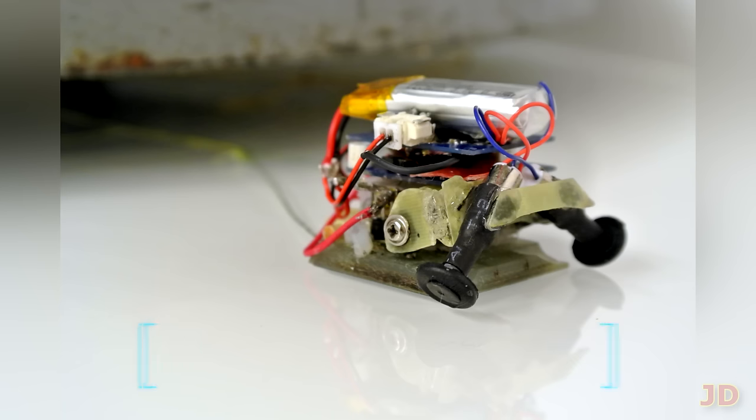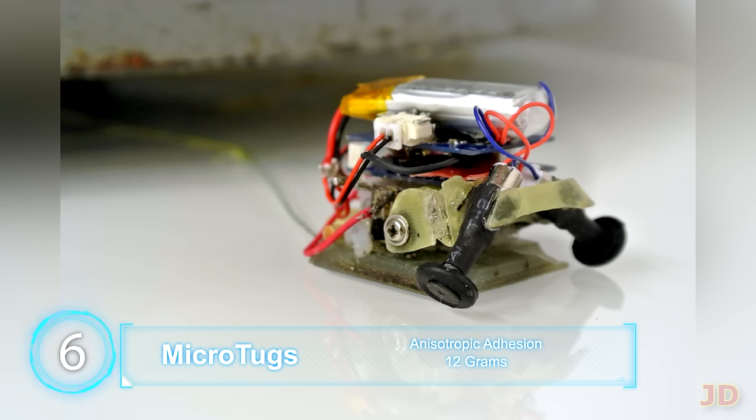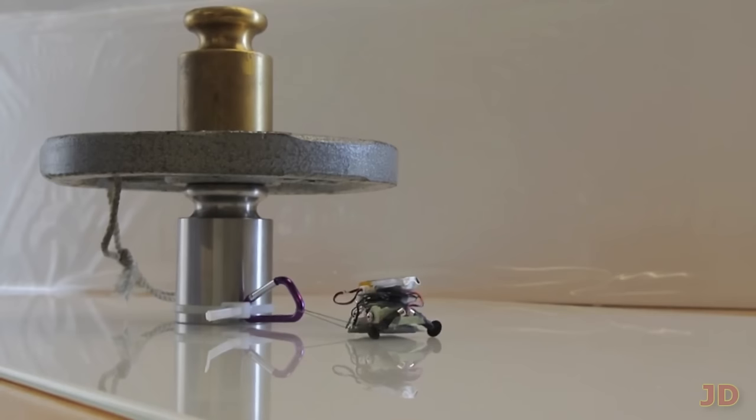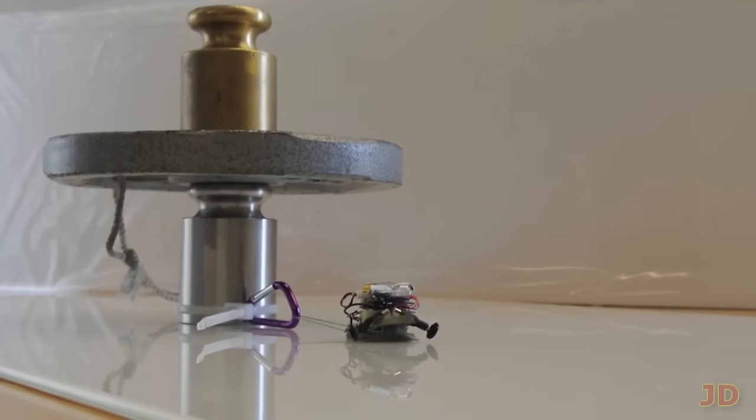At number 6, Microtug. Built by Stanford University, this bot is ultra-strong and mobile and can tow objects over 2000 times its own weight. It uses micro-cohesive hairs so that it can even pull objects up walls. That's pretty impressive considering that's kind of like a human pulling 200 tons.